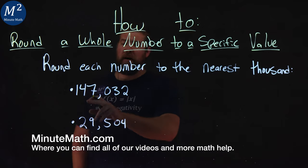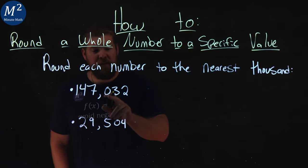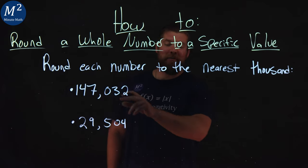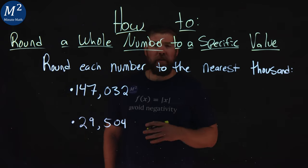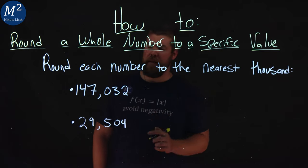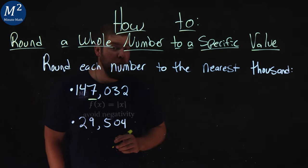Our first number here is 147,032. I almost said 032, but it's just 32. We want to round to the nearest thousand. So first we can identify the thousandth place right there where the 7 is.